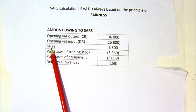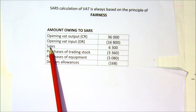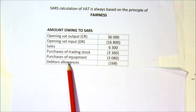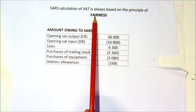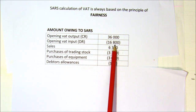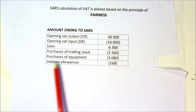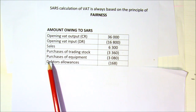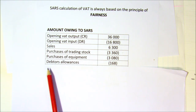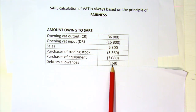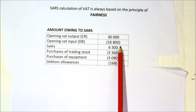We then get an item called debtors allowances. Remember, debtors allowances is the return of your sales — some goods the debtors have actually returned to you. So whereas you owed SARS money when you sold the goods, if they return those goods you do not owe that VAT to SARS. SARS will not expect you to pay all of that VAT over if some goods have been returned. It's always the VAT amount — not the full sale return amount — that you can claim back or reduce from what you owed SARS.